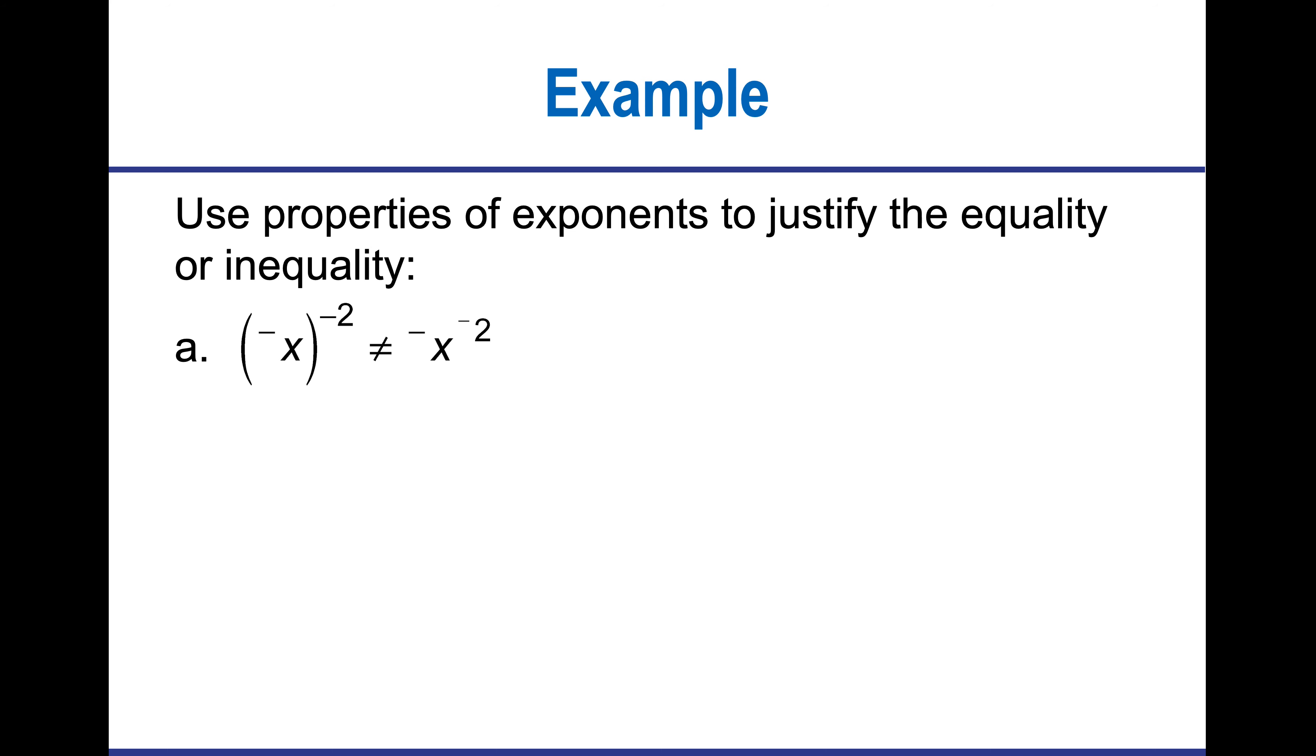If I want to use the property of exponents to justify that these things are equal or not equal. First, I'm going to have to do the negative exponent by flipping the fraction. So instead of negative x, it's going to be one over negative x to the squared. I know that when I square something, it's going to become positive. So I have one over x squared, which is not negative x to the negative two. So we can say that we don't think this is going to be an equality statement.